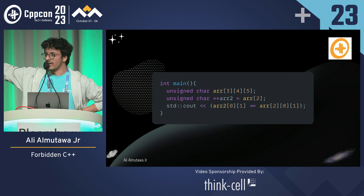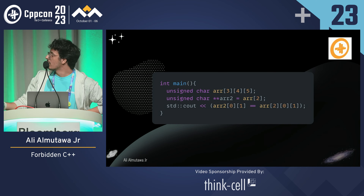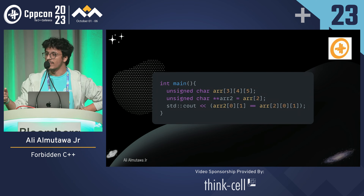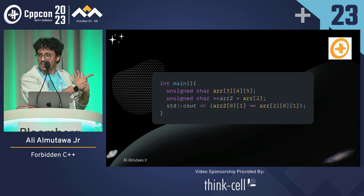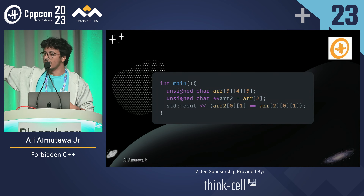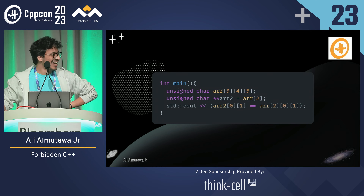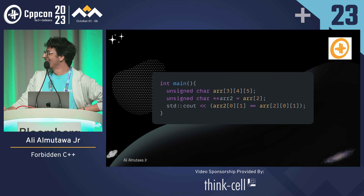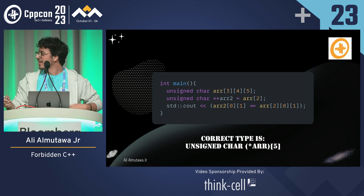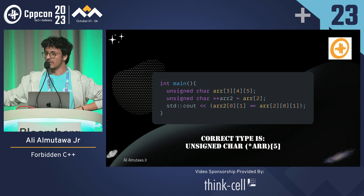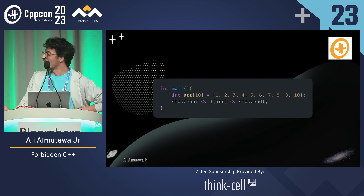I've seen this in actual code. It's a 3D array, and I'm doing an unsigned char pointer-pointer array. I'm setting it equal to the two-dimensional array inside the 3D array, and checking if these are equal. Does this compile? This doesn't compile. The correct type is unsigned char pointer of array. But it would compile and print true if using the second type.